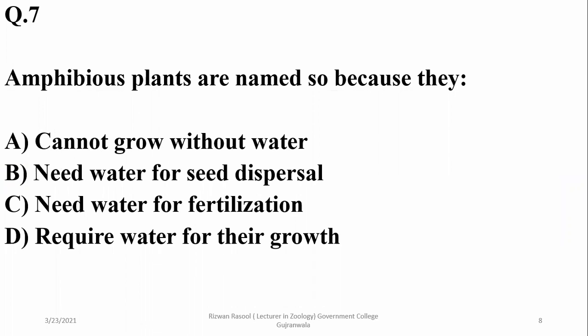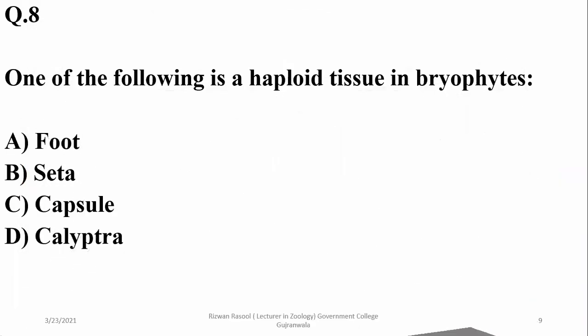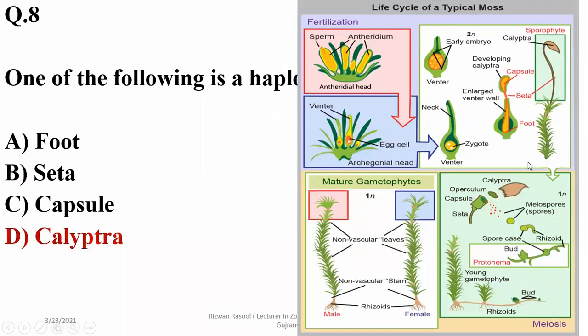Bryophytes are named as amphibious plants because they require water for their fertilization and their flagellated male gametes. One of the following is a haploid tissue in bryophytes: the foot, seta, and capsule are the sporophyte portion and are diploid, but calyptra is a covering around the capsule derived from the gametophyte and it is haploid. So the right option is calyptra.